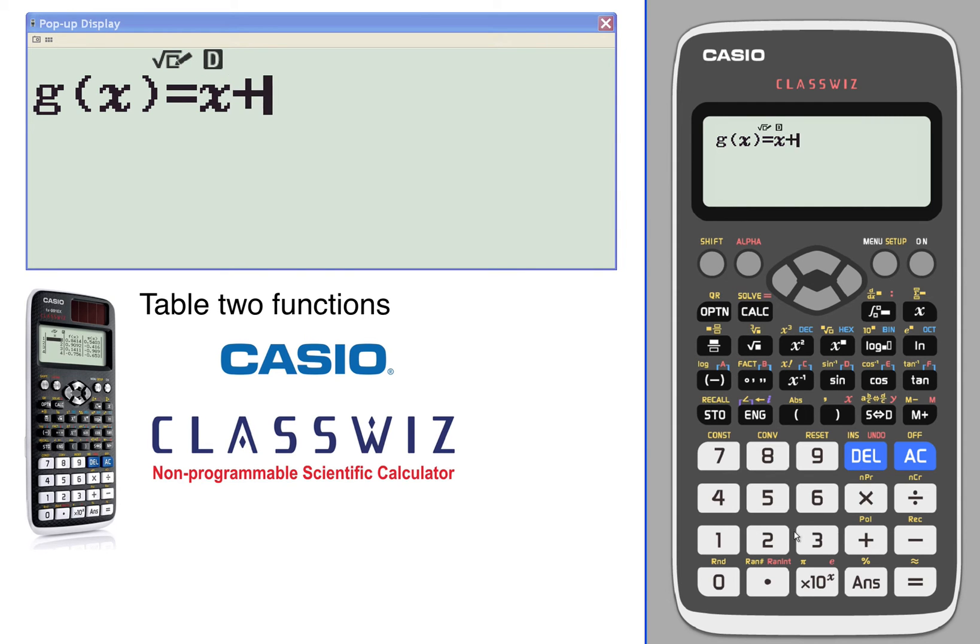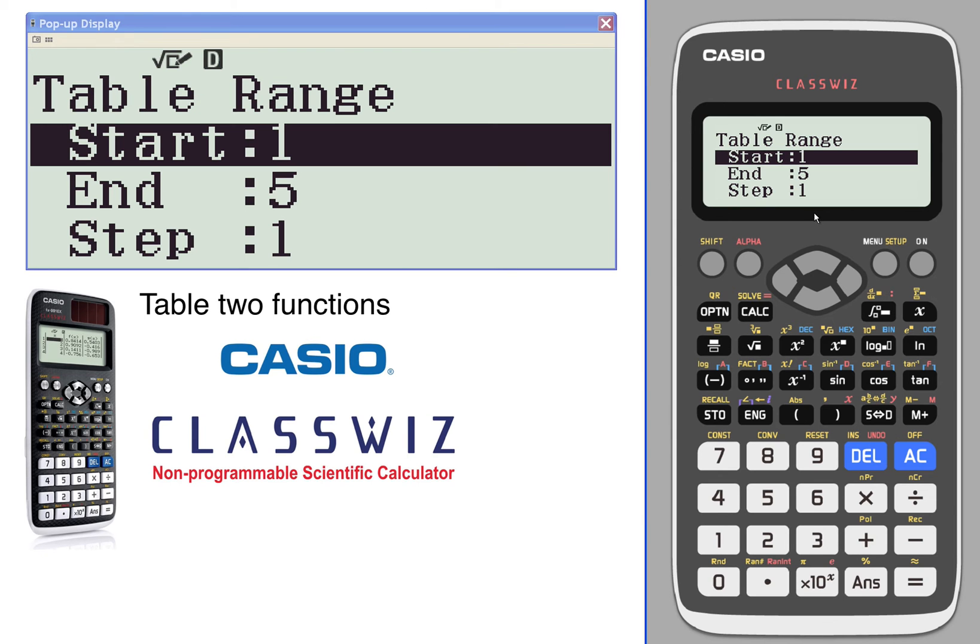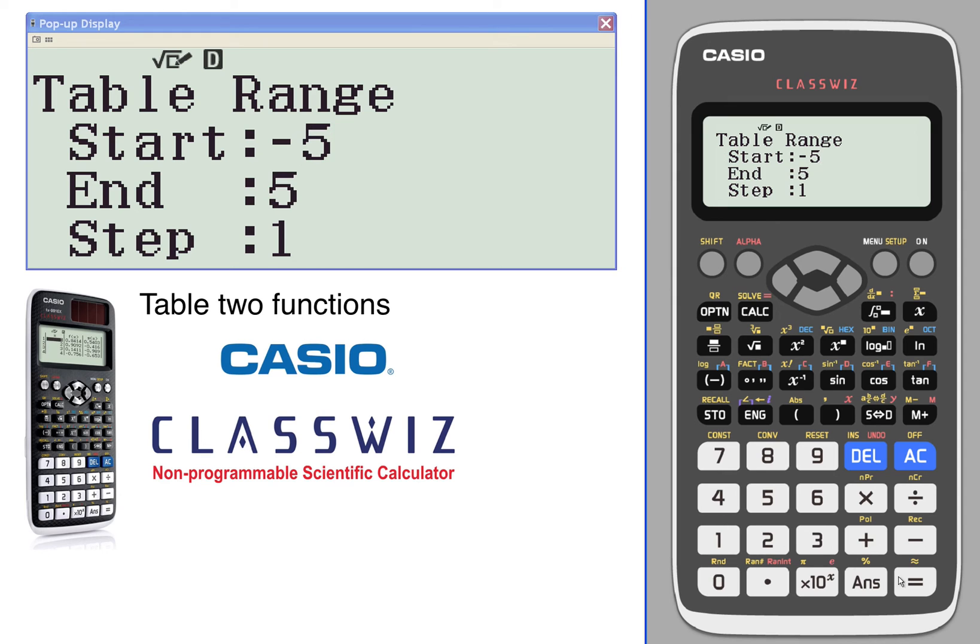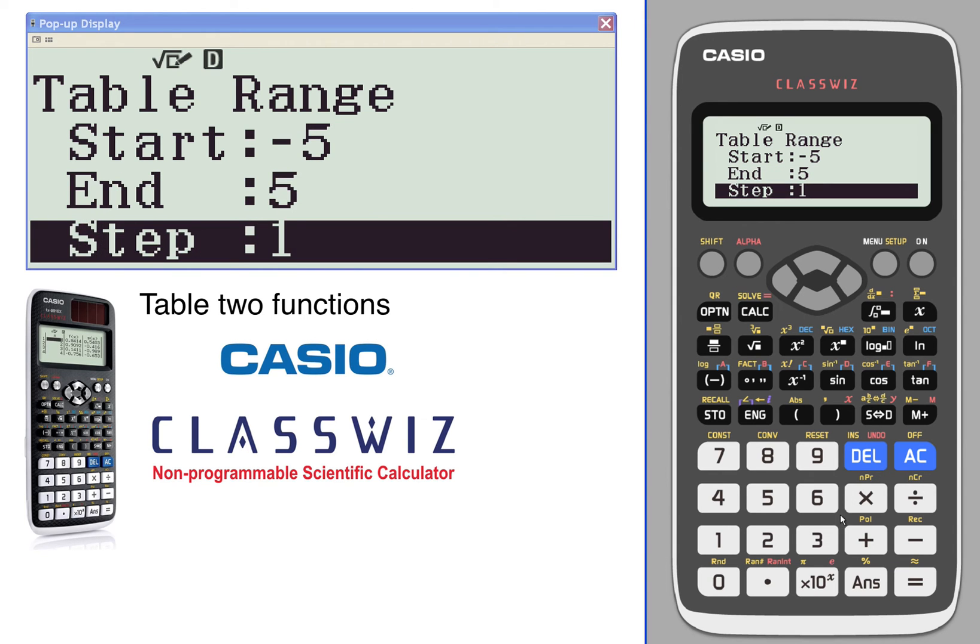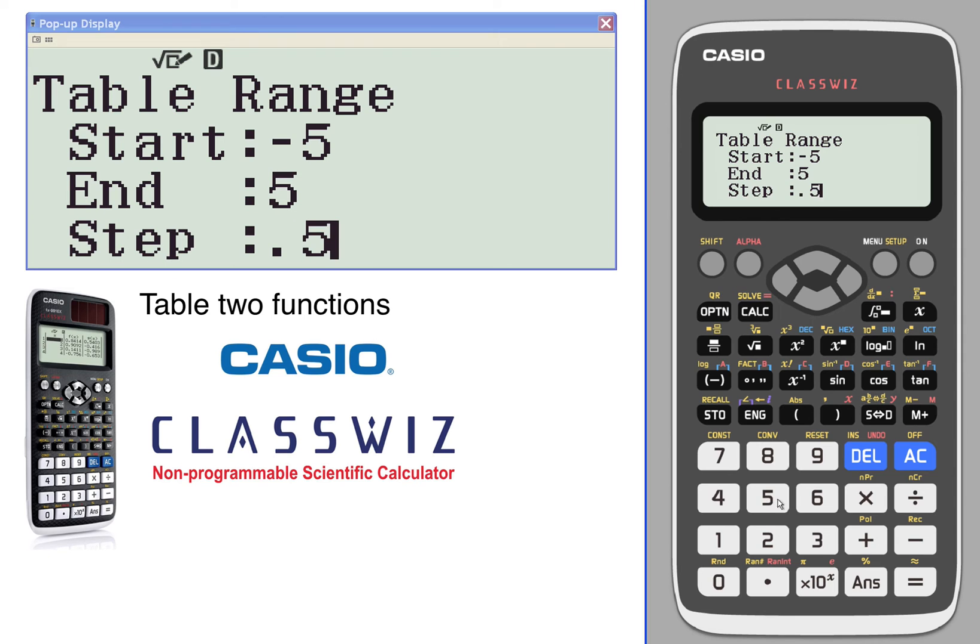For the range, we're going to go from negative five to five. For the steps, we're going to use steps of point five.